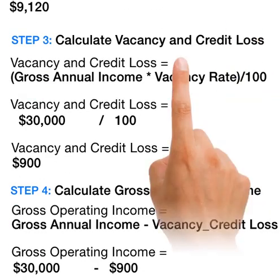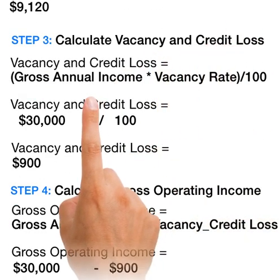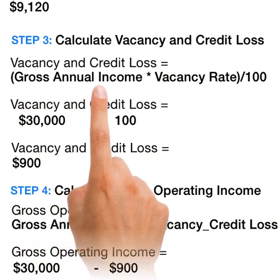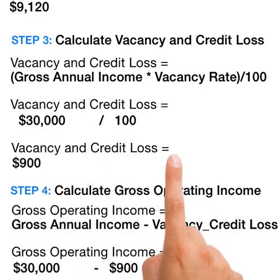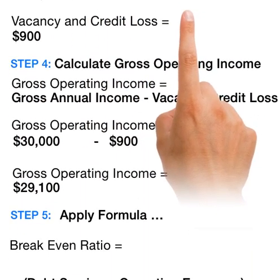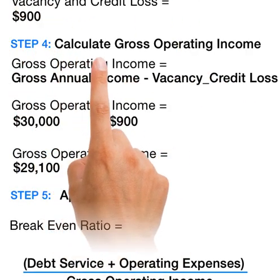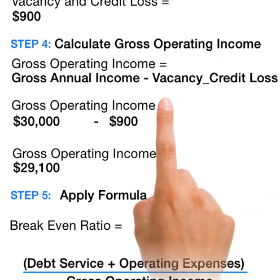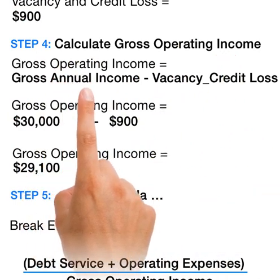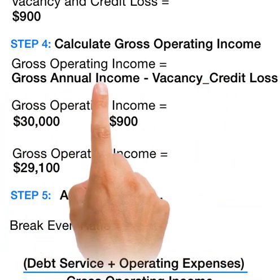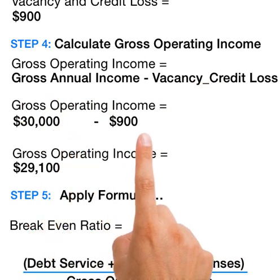Then we proceed to calculate the vacancy and credit loss, which is calculated by multiplying the gross annual income by the vacancy rate. $30,000 times 3% equals $900. Then we calculate the gross operating income, which is calculated by subtracting the vacancy and credit loss from the gross annual income: $30,000 minus $900 equals $29,100.